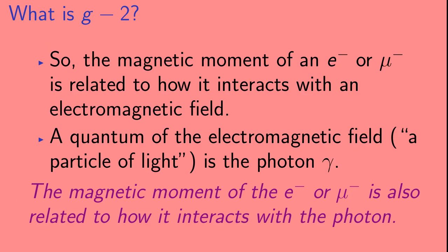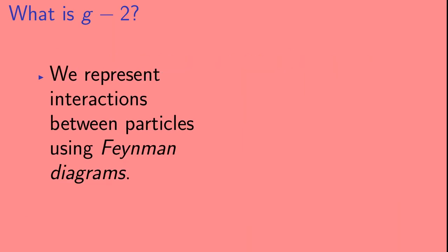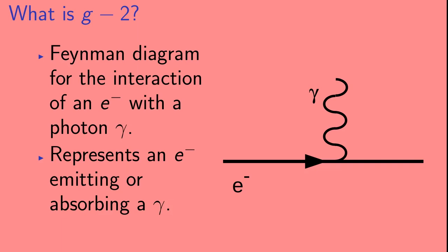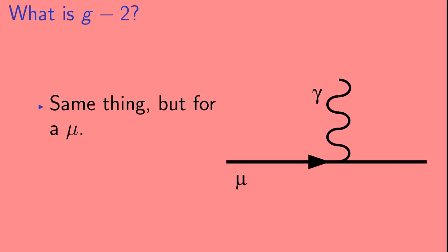So, the magnetic moment of an electron, or of a muon, is related to how it interacts with an electromagnetic field. And a quantum of the electromagnetic field, you can think of it as a particle of light, is the photon, which we call gamma. This means that the magnetic moment of the electron, or muon, is also related to how it interacts with the photon. Now, we represent interactions between particles using Feynman diagrams. So, for example, here's a Feynman diagram for the interaction of an electron with the photon gamma. It represents an electron emitting or absorbing a photon. Here we have the same thing, but for a muon.